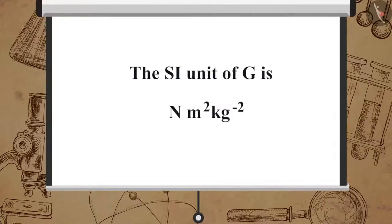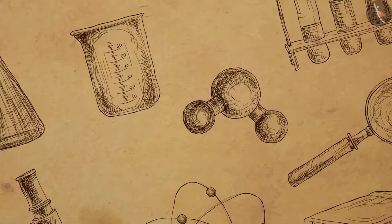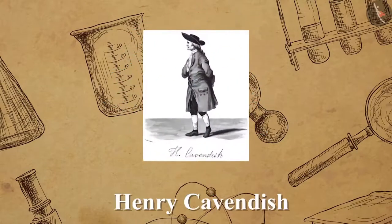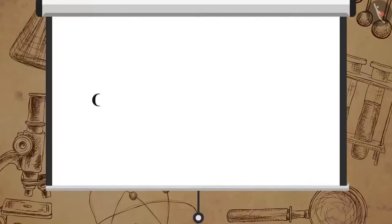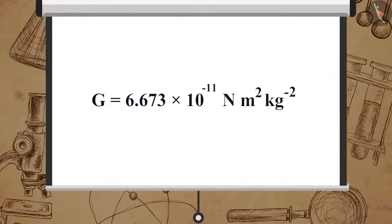The value of universal gravitation constant G was calculated by Henry Cavendish. He used a sensitive balance to do so. The accepted value of G is equal to 6.673 multiplied by 10 raised to minus 11 Newton meter square per kilogram square.